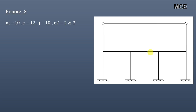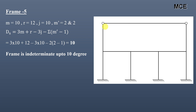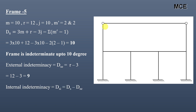For Frame 5, we can see it has a total of 10 members, 12 reactions, 10 joints, and 2 internal hinges. The number of members meeting at both internal hinges is 2, so m′ = 2 and 2. The value of ds = 10, so this frame is indeterminate to 10 degrees. External indeterminacy = 12 − 3 = 9. Internal indeterminacy = 10 − 9 = 1.